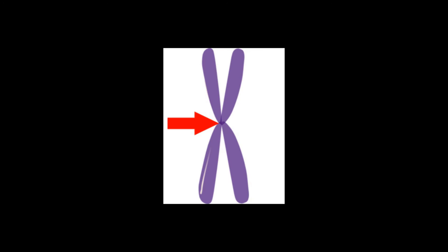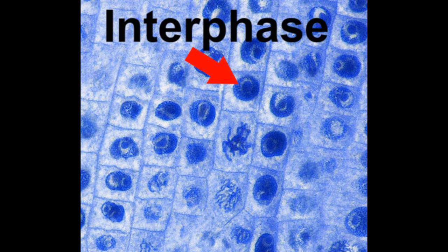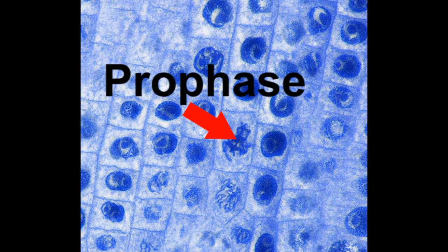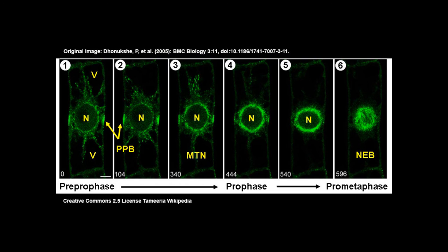Two identical sister chromatids are connected at the centromere by the kinetochore. Unlike chromosomes during interphase, these chromatids are visible under a microscope. Spindle fibers made of microtubules extend from the poles of the cell to the centromeres. Some spindle microtubules extend from pole to pole and do not attach to a chromatid; these function as a framework.